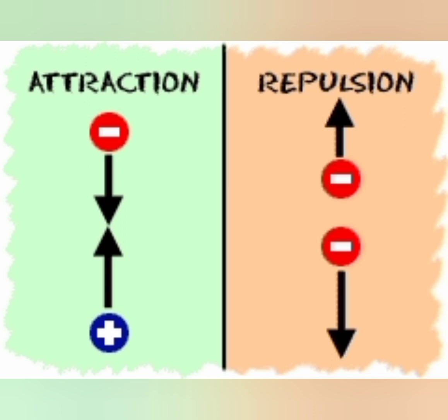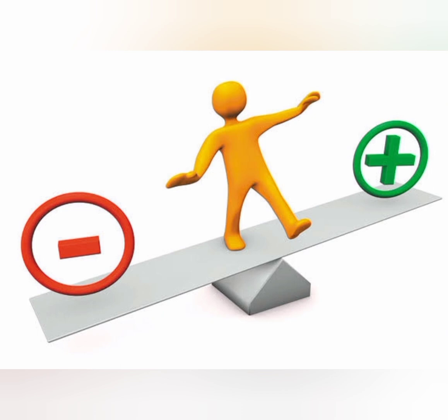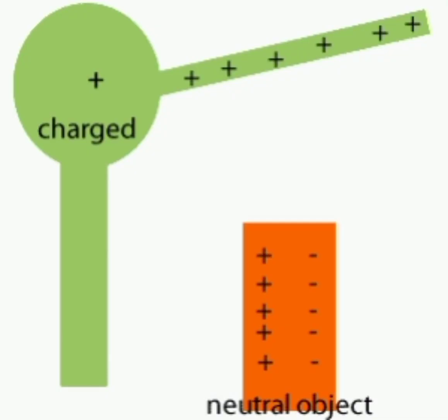Opposite charges attract each other — negative to positive. Like charges repel each other, positive to positive or negative to negative. Most of the time positive and negative charges are balanced in an object, which makes that object neutral. Static electricity is the result of an imbalance between negative and positive charges in an object. These charges can build up on the surface of an object until they find a way to be released or discharged.